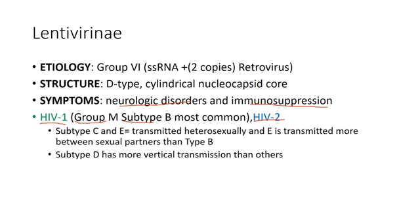HIV-2 is another virus found within this group. There are other subtypes besides B, such as C and E, which are transmitted heterosexually. Subtype E is transmitted more between sexual partners and is the most common around the world after B. Subtype D is more associated with vertical transmission than most other subtypes — so if someone comes in with subtype D, you're probably talking about an infant with vertical transmission.